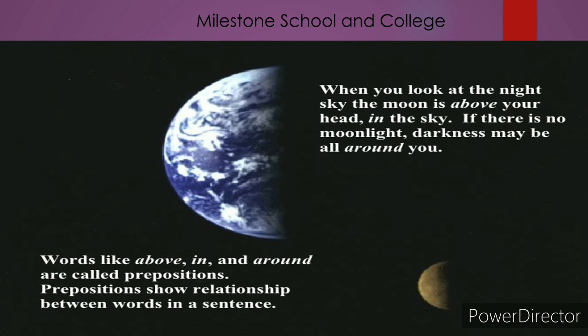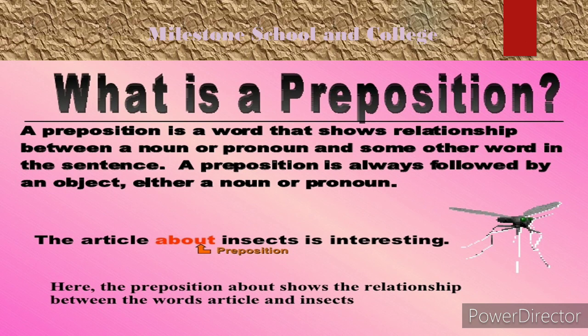Prepositions show relationship between words in a sentence. By applying words like above, in, and around, we can link one part with another part in a single sentence. A preposition can establish the relationship between other words. So, what is a preposition? A preposition is a word that shows relationship between a noun or pronoun and some other word in the sentence.